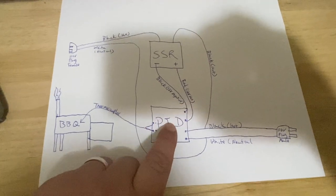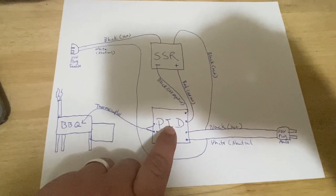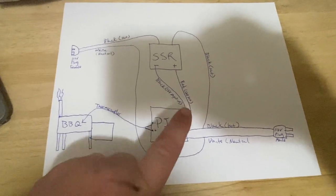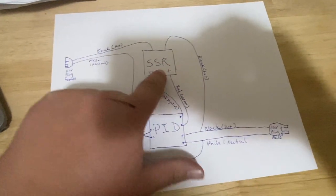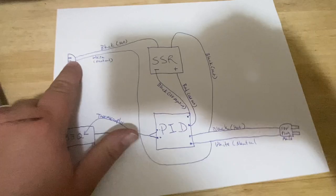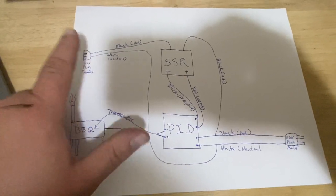Basically what happens is when the PID falls below the set temperature, it sends a 12 volt signal. 12 volt signal goes to the SSR. SSR trips the relay which sends power to your female plug and turns on your component.